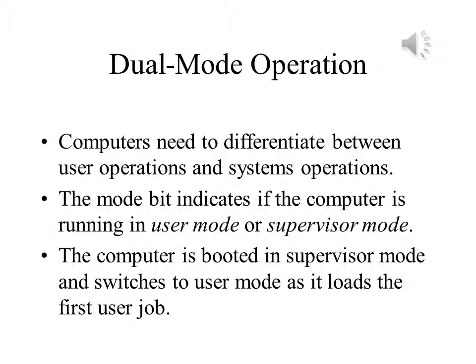But the operating system needs this kind of access to system resources, and the computer needs to be able to distinguish between when user programs are doing things that they shouldn't, and when the operating system is doing its job. Computers use a mode bit to determine which mode of operation the computer is using — user mode, where the user is restricted from certain activities, or supervisor mode, where the operating system is allowed access to all the computer's resources.